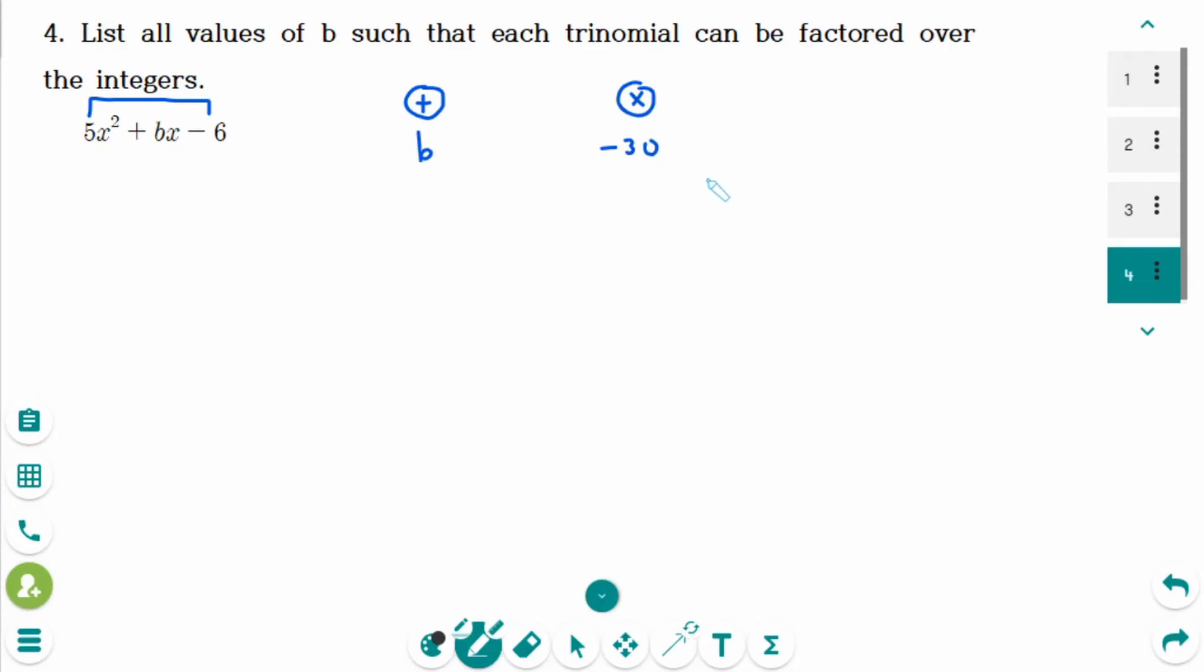Integers that multiply to minus 30 are 1 times minus 30, minus 1 times 30, 2 times minus 15, minus 2 times 15.